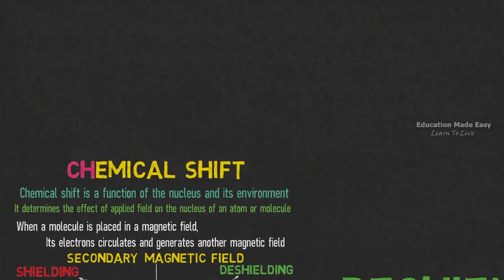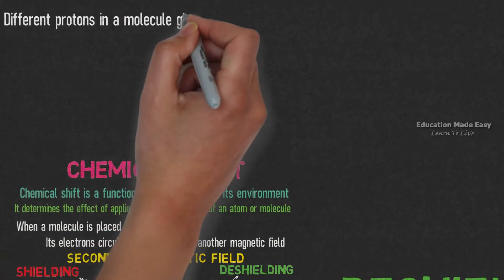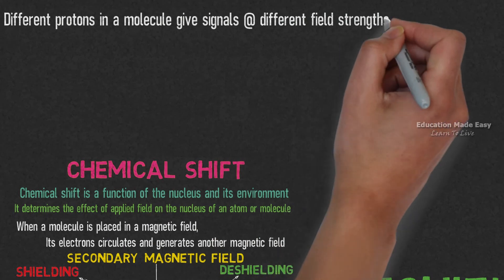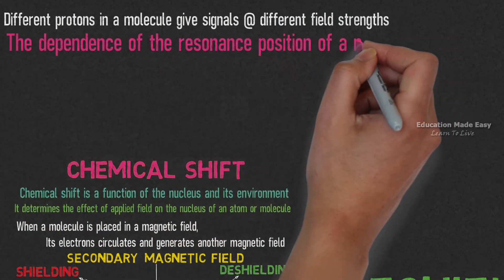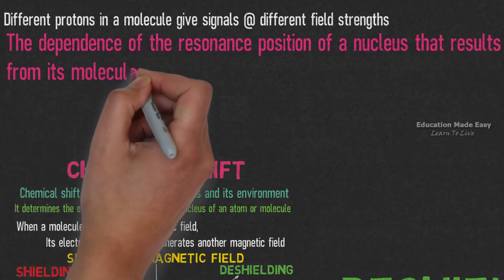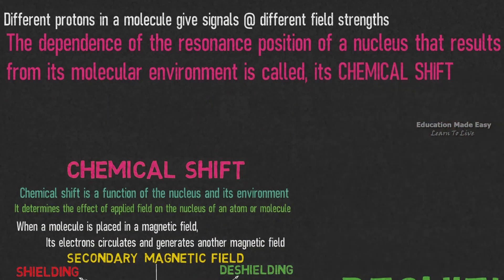Now, let us find the formula for chemical shift. Different protons in a molecule give signals at different field strengths. The dependence of the resonance position of a nucleus that results from its molecular environment is called its chemical shift.